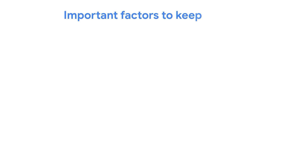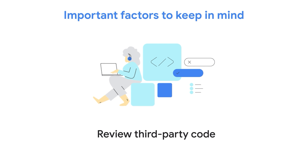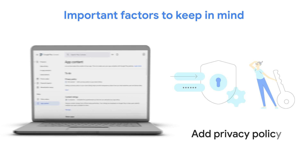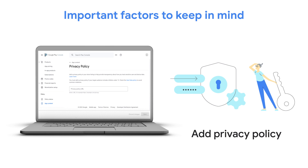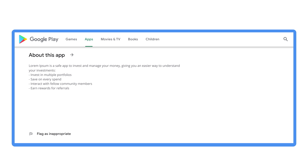Here are some important factors to keep in mind. Review how your app collects and shares user data by checking your app's declared permissions and the APIs used. Review how any third-party code such as third-party libraries or SDKs in your app collects and shares such data. Ensure that you have added a privacy policy. Google Play will have one Data Safety Section in the Google Play Store listing per package name that is agnostic to usage, app version, region, etc. Hence your Data Safety Section should be a global representation and describe the sum of your app's data collection and sharing across all its versions.